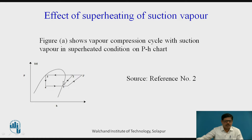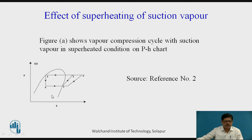When the initial vapor at the suction of the compressor — that is the vapor leaving the evaporator — is superheated, then this point 1 will be shifting towards the right. Let us call this point as 1 dash. So the compression line will shift from 1-2 to 1 dash-2 dash. This figure shows the vapor compression cycle with suction vapor superheated on the pressure-enthalpy chart.